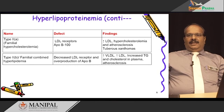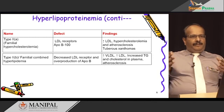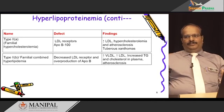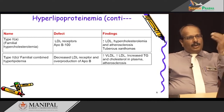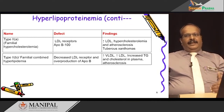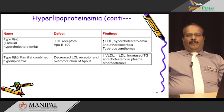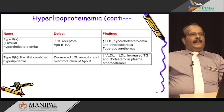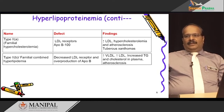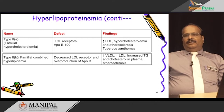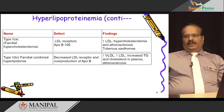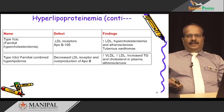Type 2B, familial combined hyperlipidemia. The defect here is a decreased number of LDL receptors, meaning low uptake of LDL into cells. Additionally, overproduction of ApoB, which is expressed both in the intestine and also in the liver, is another cause for type 2B. The clinical findings include increased VLDL, increased LDL, increased triglyceride and cholesterol in plasma. Atherosclerosis is the major complication in this type.